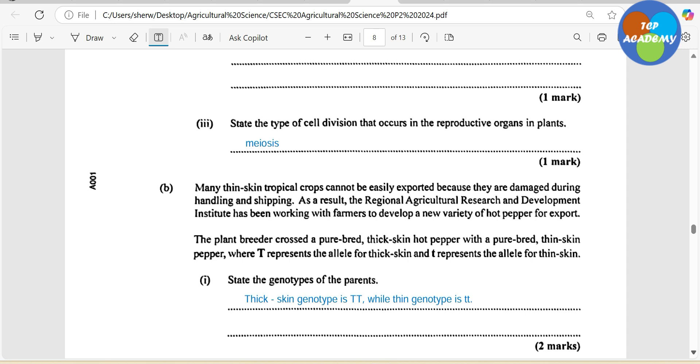This question is a genetic question. And if you have not done agri or bio, one of those courses that offer these genetic crosses, you might be struggling here. So let me explain very quickly what is happening. Many thin skin tropical crops cannot be easily exported because they are damaged during handling and shipping. Jamaicans can speak about the Otaheite apple. I don't think we can transport it anywhere more than the market here in Jamaica. Because before it reaches where it's going to go, it's going to be damaged. As a result, the Regional Agricultural Research and Development Institute has been working with farmers to develop a new variety of hot pepper for export.